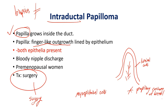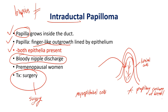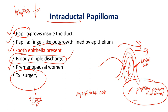Both intraductal papilloma and papillary carcinoma will have bloody nipple discharge. The way to remember this: papillas have a fibrovascular core — vascular means there's blood inside that network. If that's damaged as milk flows over it or something damages the epithelium over the papilla, blood can be released, causing bloody nipple discharge. This occurs in pre-menopausal women. To summarize, intraductal papilloma must be differentiated from papillary carcinoma — the primary difference is the absence of myoepithelial cells in the malignant papillary carcinoma.